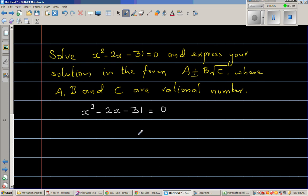So the method that we are going to use is the method called completing the square. So what we do is, I am going to write x squared minus 2x. So let me write minus 31 here. So I want to make it a complete square, a perfect square.